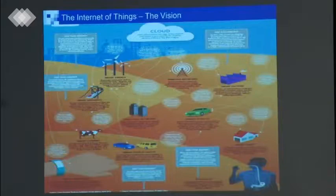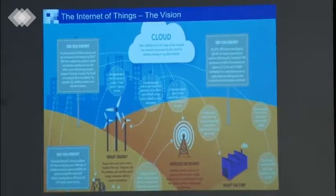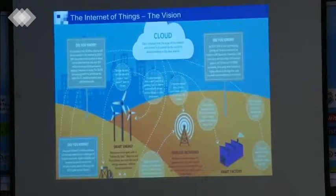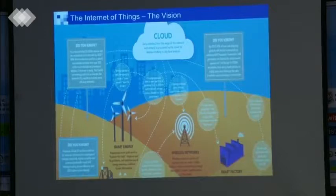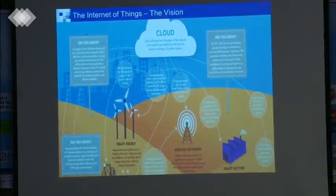People talk about smart energy. What is smart energy? Today you have different sources of energy production: solar energy, energy from dams, from nuclear plants. These sources have different characteristics. For instance, if the weather is fine and your photovoltaic plants are producing a lot of energy, you should shut down some other sources.